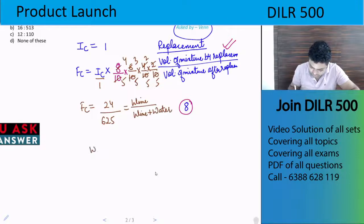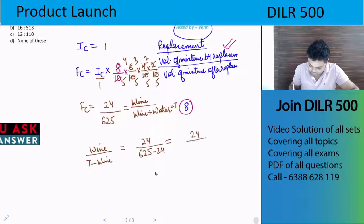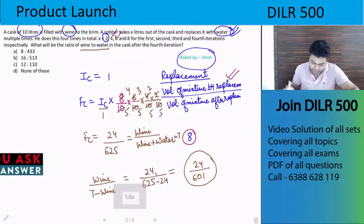Now we need wine to water ratio. Wine upon total mixture minus wine, which is 24 divided by (625 minus 24), that is 24 divided by 601. Let me check which option matches.